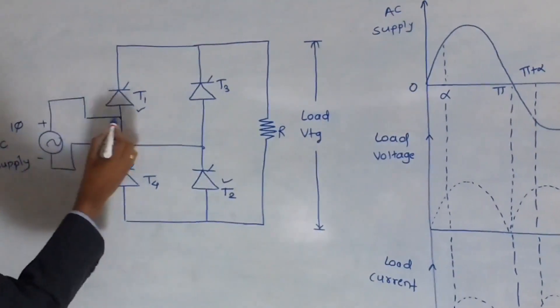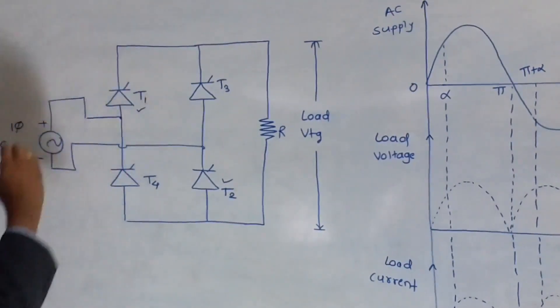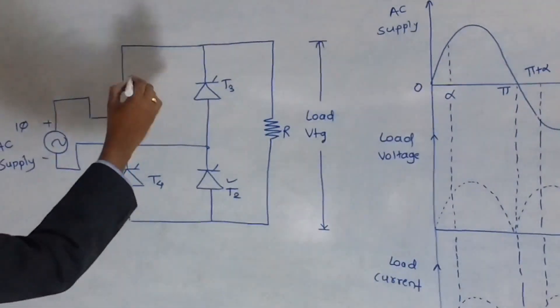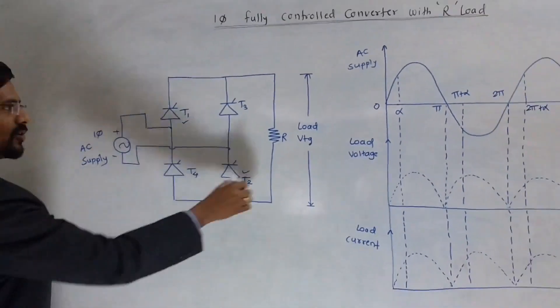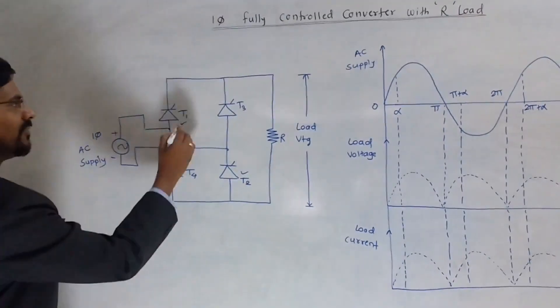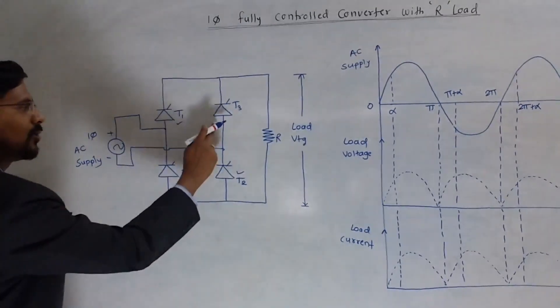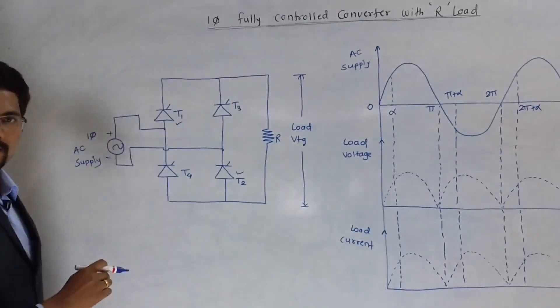That means this positive is connected at the anode side of this SCR and this negative is connected at the cathode side of this SCR for this loop. Therefore, this T1 is in forward bias. Similarly, this T2 also is in forward bias. And remaining 2 SCRs are in reverse bias.